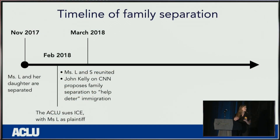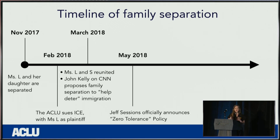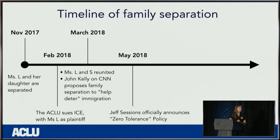In March of 2018, Ms. L and her daughter were reunited, largely in response to pressure from this litigation. But in that same month, then-DHS Secretary John Kelly proposed on CNN that family separation might be a useful policy to help deter immigration from Central America. In May, this policy became official and was met with immediate backlash from the legal community, from activists, from regular people, from families. This was a huge story, and it really enraged everyone, as it should have.